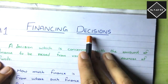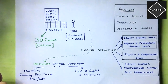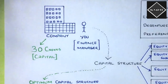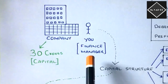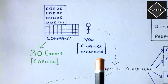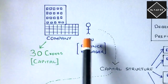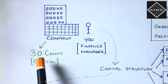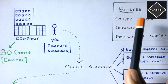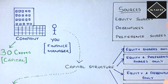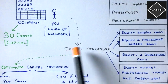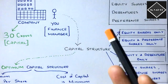Let's understand the financing decision chapter in detail. Say you are a finance manager and your company needs a capital of 30 crores. The first thing you need to do is identify the long-term sources of funds — equity shares, debt or debentures, and preference shares. Now you have to create a capital structure using these sources.